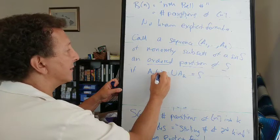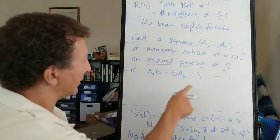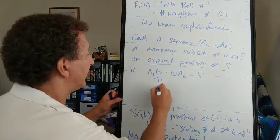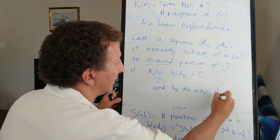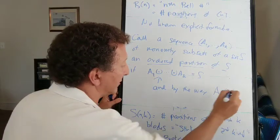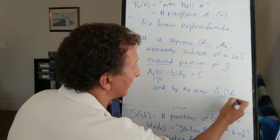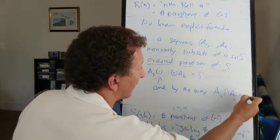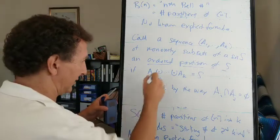I guess I can write, if we put dots on the union sign, that's the same thing as saying the union is S. And by the way, any two of these have empty intersection. So disjoint union is that symbol.